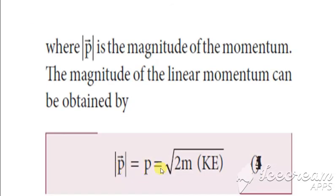So the kinetic energy is equal to P square by 2M. If we take the root, we get P equals root of 2M into kinetic energy.